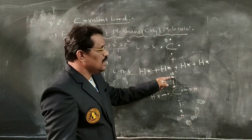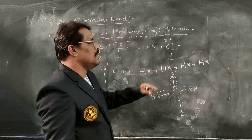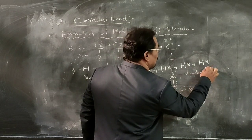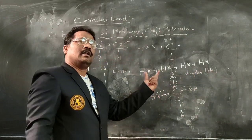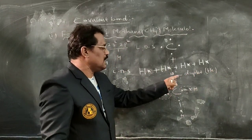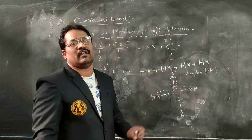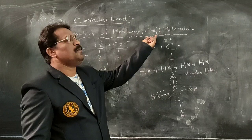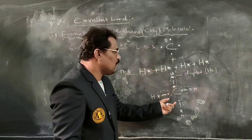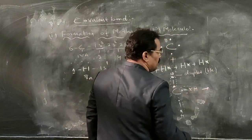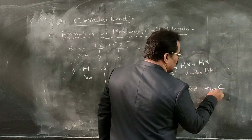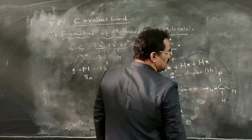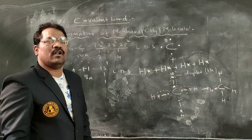Similarly, each hydrogen atom, by sharing one electron with one electron of carbon, attains the duplet configuration of helium. Helium is a stable element and neon is also a stable element. Therefore, carbon shares its four electrons with four hydrogen atoms, forming a new molecule with four covalent bonds. That molecule is called the methane molecule.